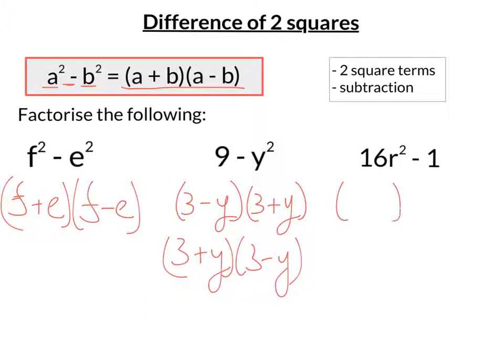So I'm going to have my two brackets. I'm going to have 4r minus and 4r plus. Now, 1 is a squared term, because 1 times 1 is 1. So this is 4r minus 1 and 4r plus 1.